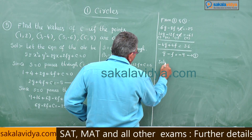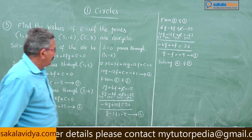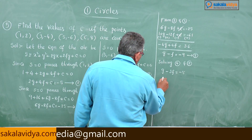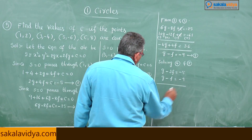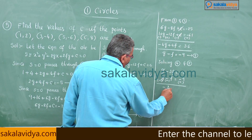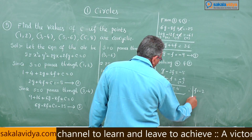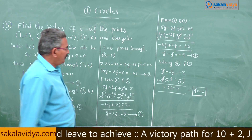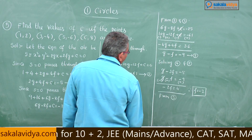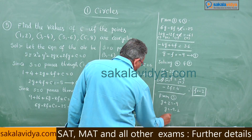Solving Equations 4 and 5: g − 3f = −5 and g − f = −9. Subtracting, g cancels: −2f = 4, so f = −2. Substituting f = −2 into Equation 5: g − (−2) = −9, so g + 2 = −9, giving g = −11.